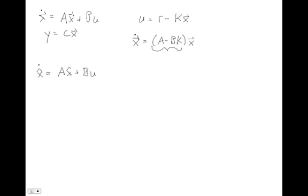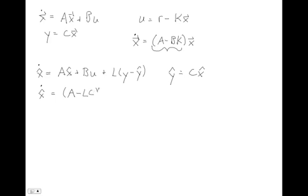This observer alone isn't going to correct for any errors in the model or in the initial state estimate. So we created a closed-loop observer by adding an additional input: a matrix of gains L times the error between our y, which we actually measure, and our estimated y coming out of the observer, where estimated y equals C times x-hat, which we have full access to. This gives us a closed-loop observer that produces x-hat-dot equals A minus LC times x-hat, with two exogenous inputs: the control input u and the real system output y.